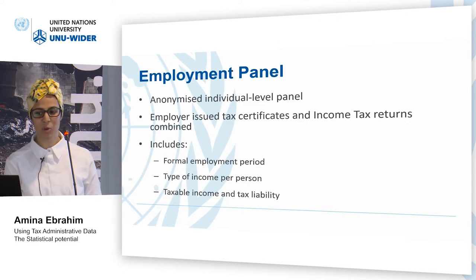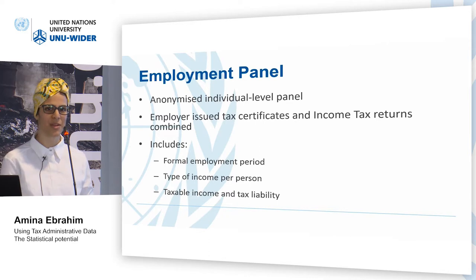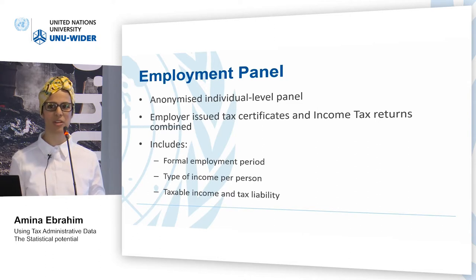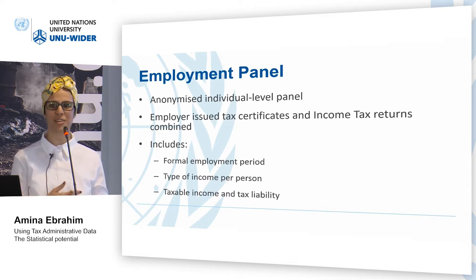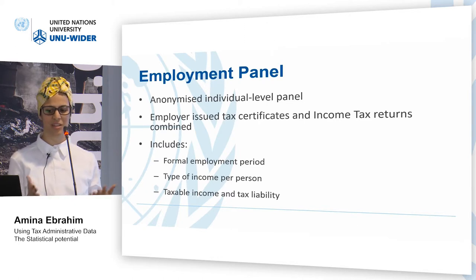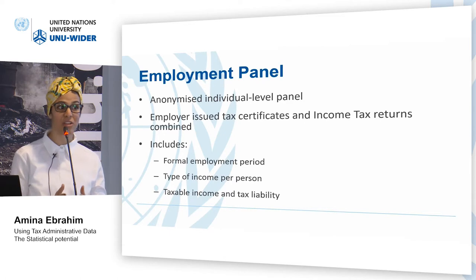A dataset that we're working on at the moment is what we want to call the Employment Panel — an anonymized individual-level data panel. This merges two sets of data: the company-issued IRP5 (the tax certificate you get for working) but also those who report their own income, such as from property, shares, or dividends. It will include your formal employment period, all types of incomes, your taxable income, and your tax liability. We're hoping this will be available to researchers to start working on in early October.